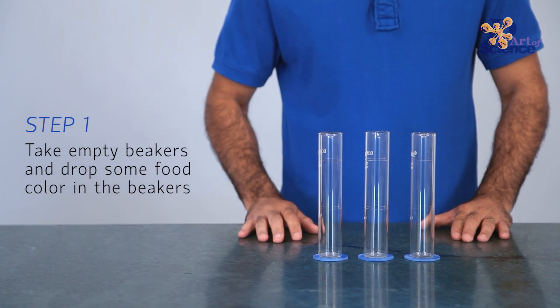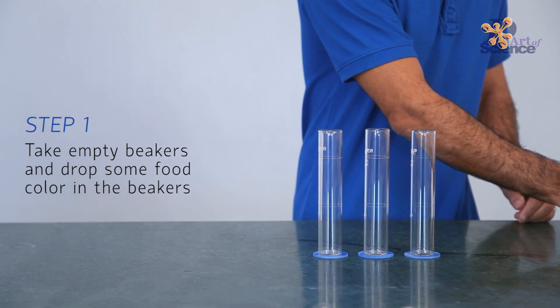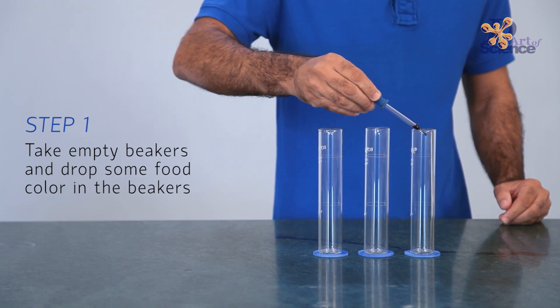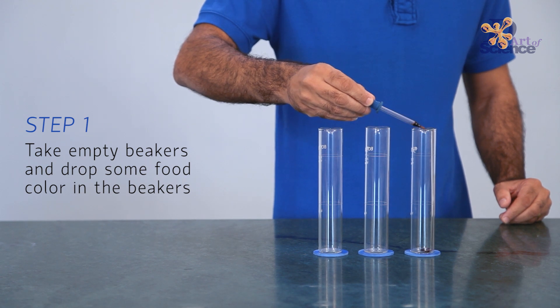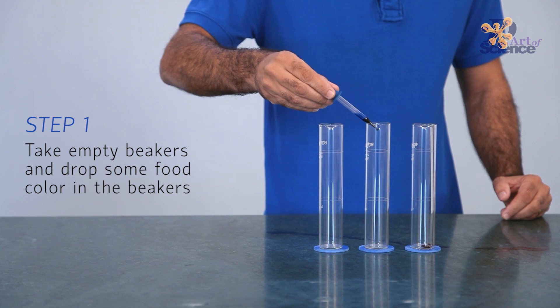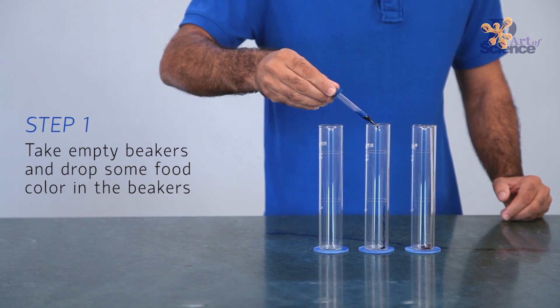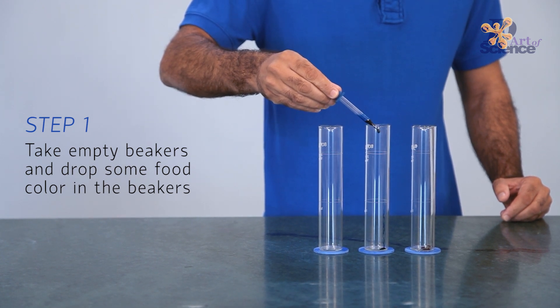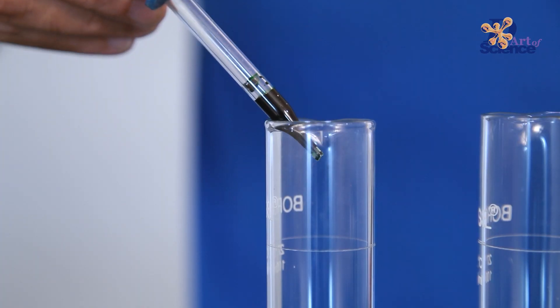Did you know that lava lamps were invented way back in the 1960s? The original lava lamps contained water and wax. The heat produced by the light bulb melted the wax and caused it to rise. The wax then falls back down as it cools.